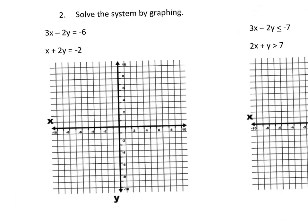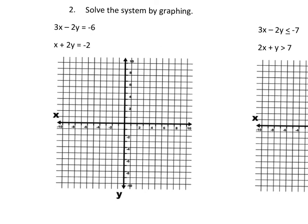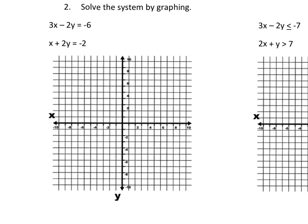So solve by graphing. What you want to do is you could find x and y intercepts if they're in standard form like this, or you could solve for y. What you're trying to do is graph, make a line and see where they intersect. So this is going to be x is negative 2, and y is 3. For my x and y intercepts, so x is negative 2, y is 3.